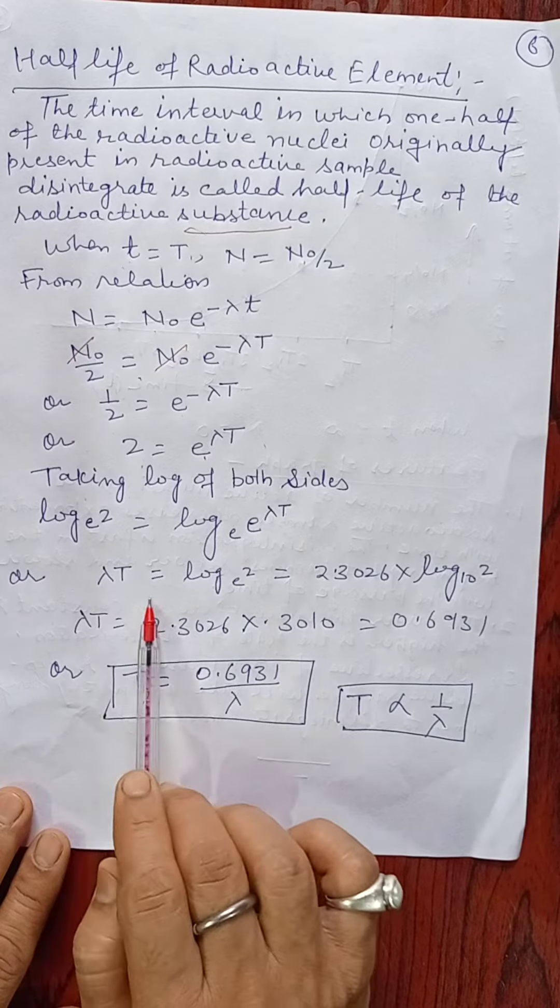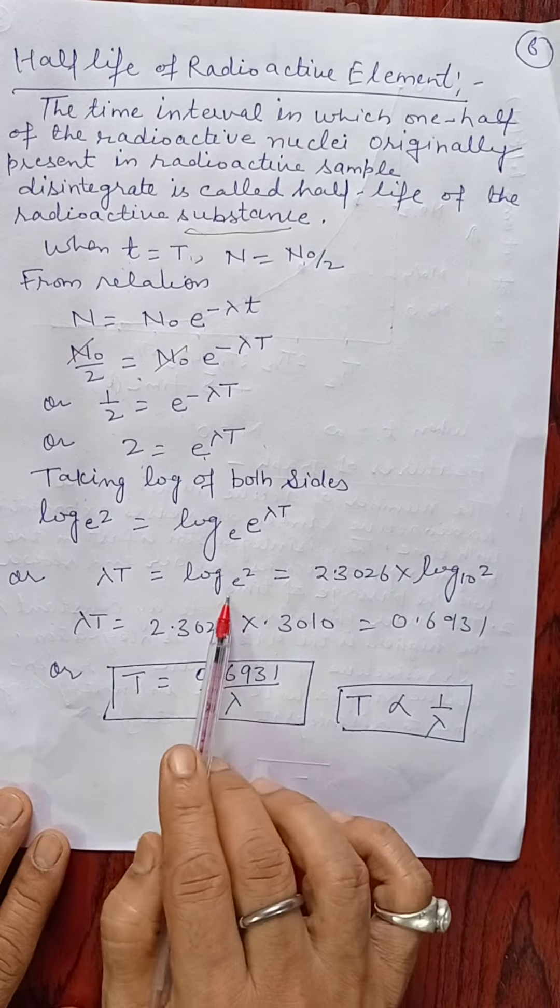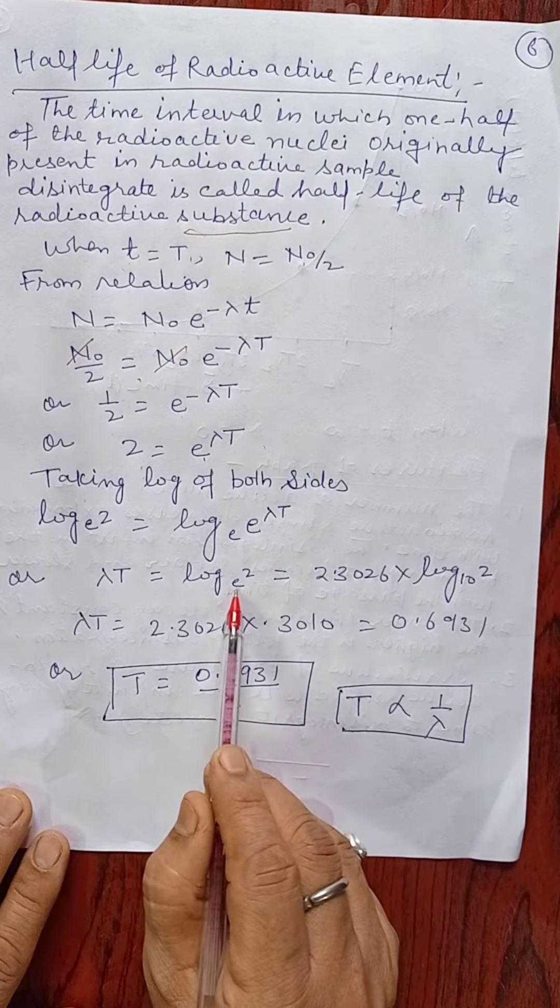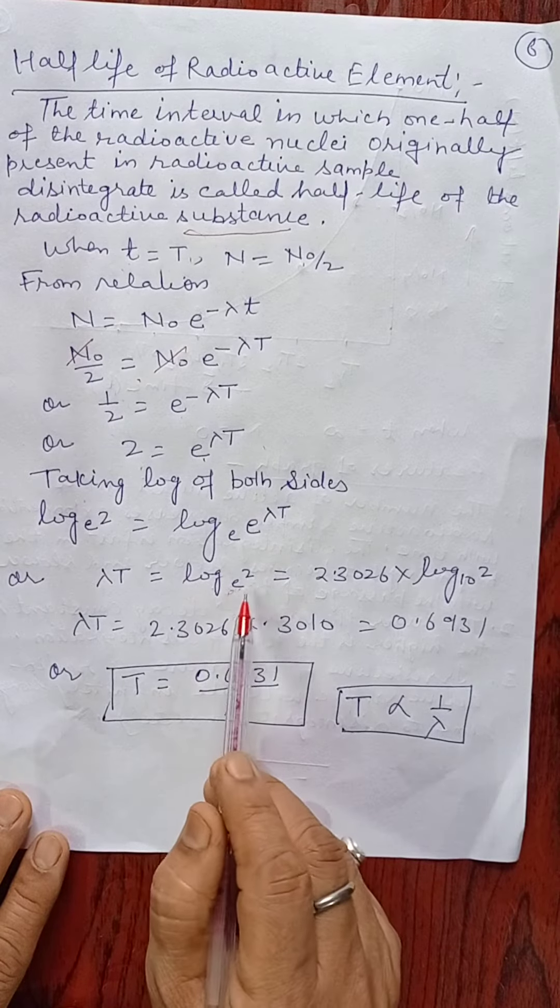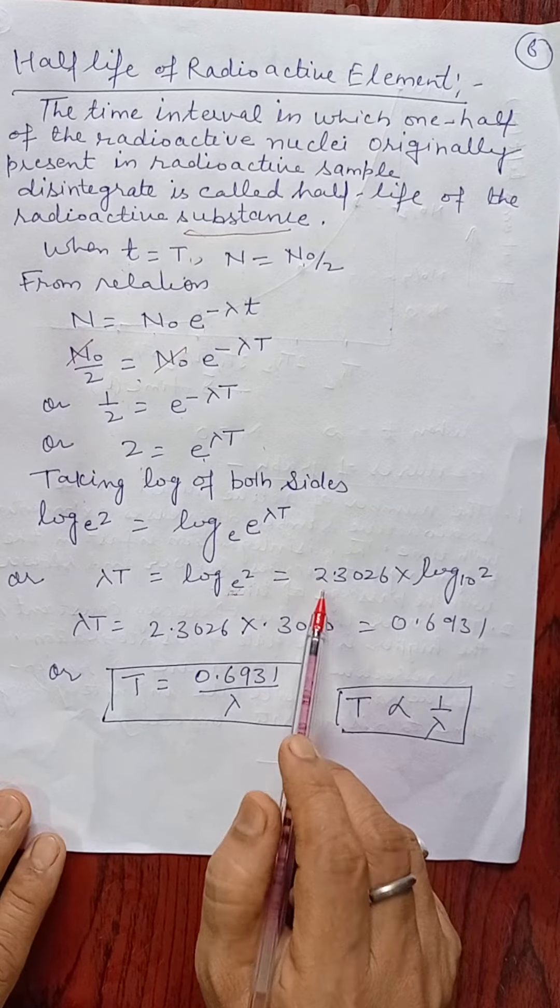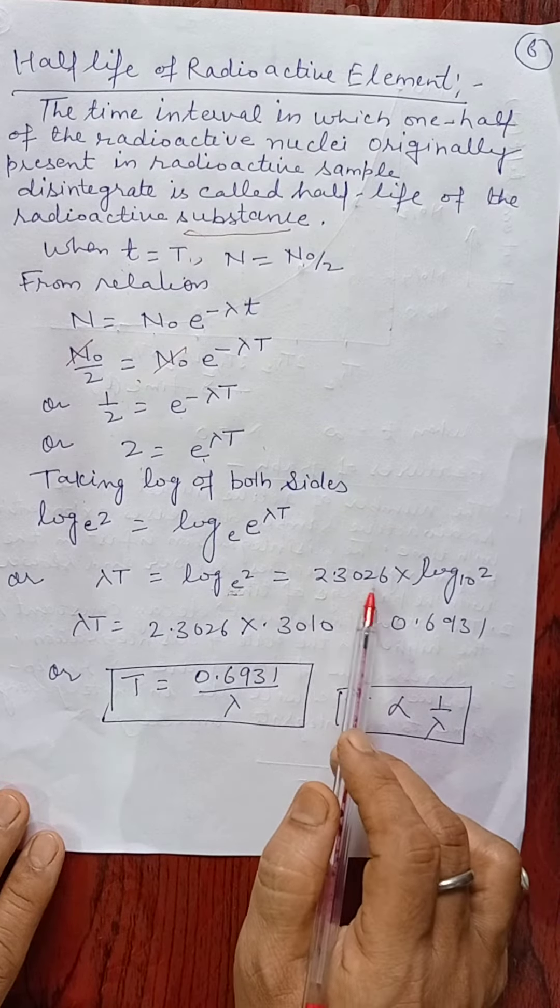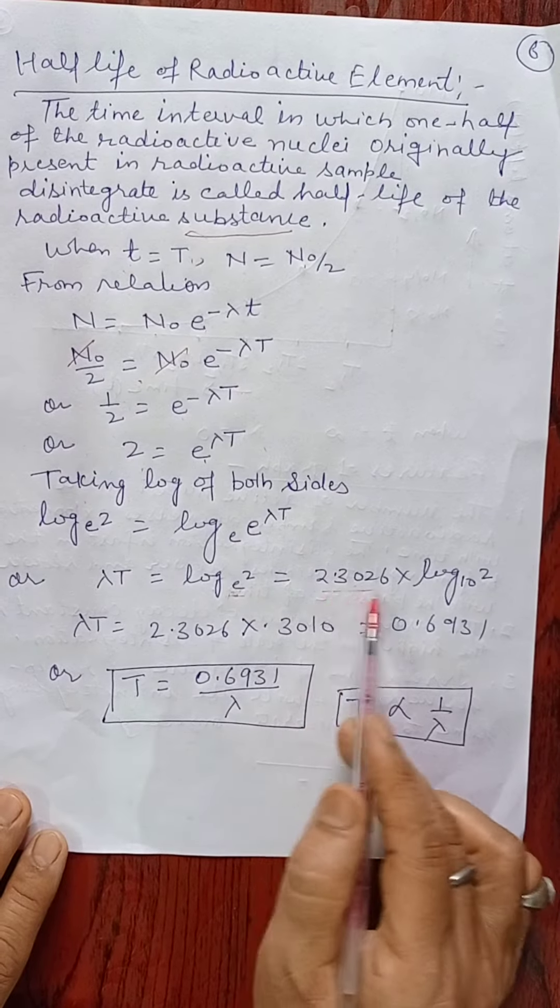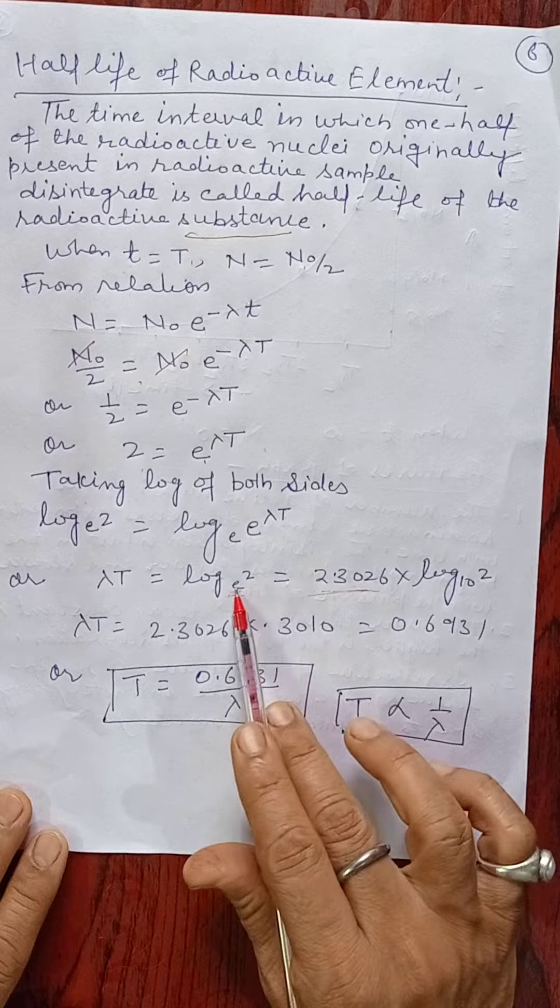So λT equals log 2 at base e. If we want to write, we have to convert the value of log at base e into log 10. So we have to multiply by a factor 2.3026. You might know from mathematics that we have to multiply by this factor to convert base e into 10.